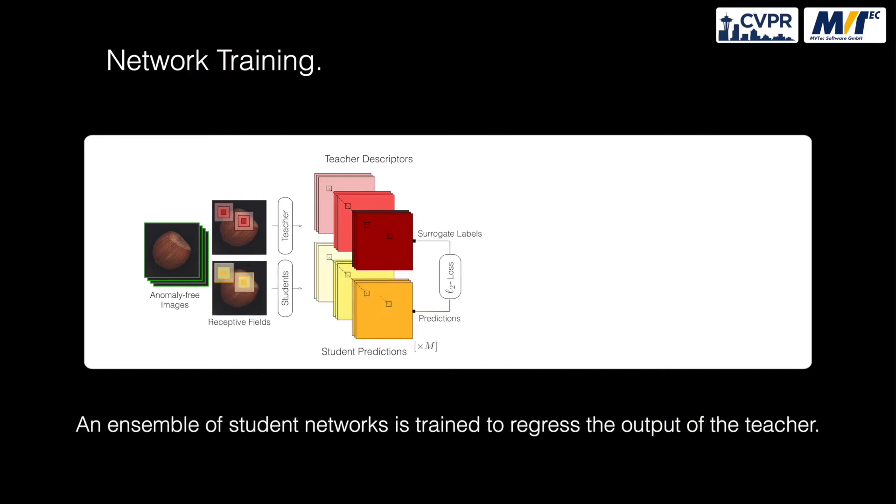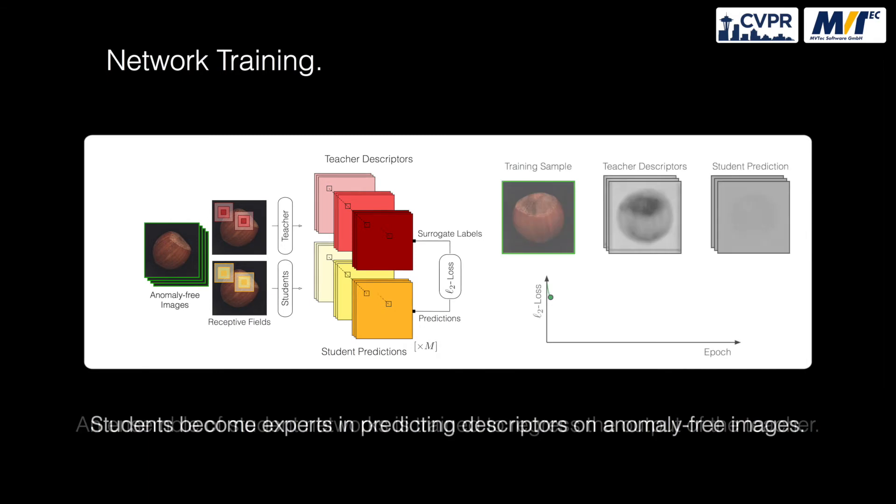An ensemble of student networks is trained to regress the output of the teacher. Students become experts in predicting descriptors on anomaly-free images.